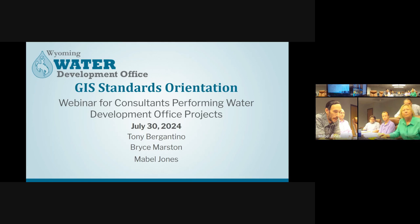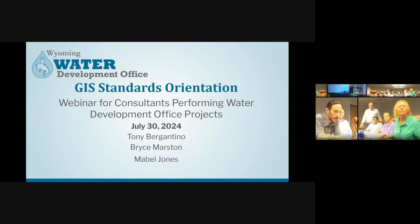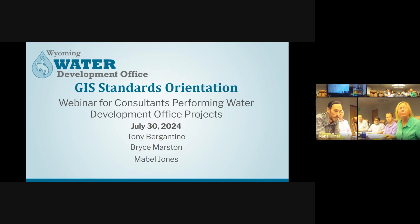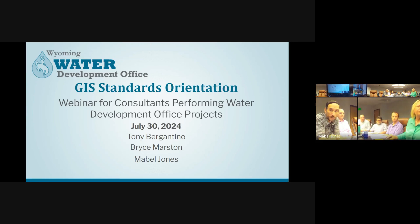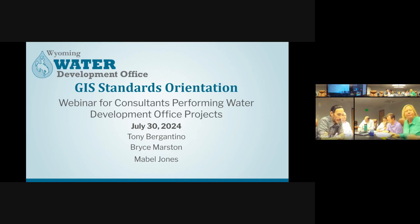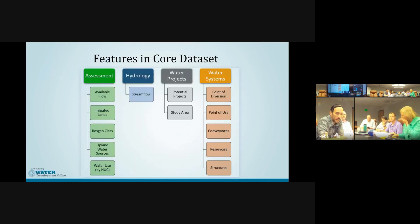Implementation of the data modernization and compiling incoming project data over the last few years has resulted in some fine tuning and updating of data templates and standards. We're currently on version four of the standards document, and since this was a pretty big overhaul, the 2024 version of the templates is also synced to version 4.0. Please make sure that you use the current versions for your projects. Beginning in 2018, the Wyoming Water Development Commission implemented standards for GIS deliverables from consultants. These standards increase consistency and reduce duplication of effort between projects.